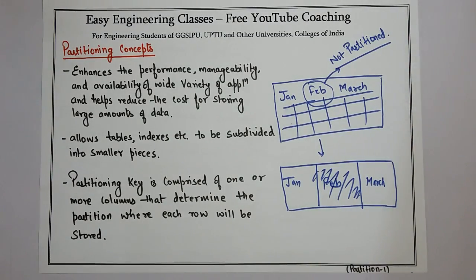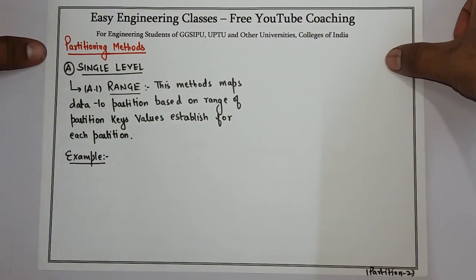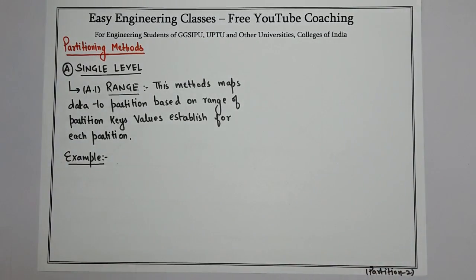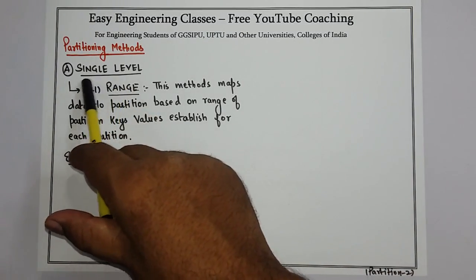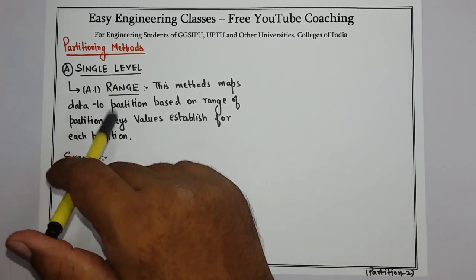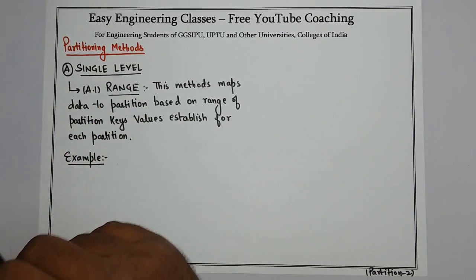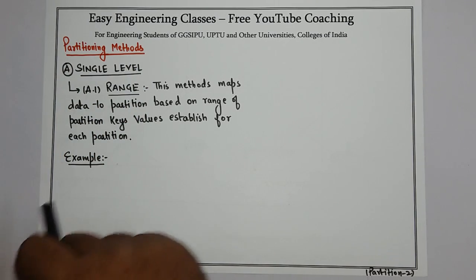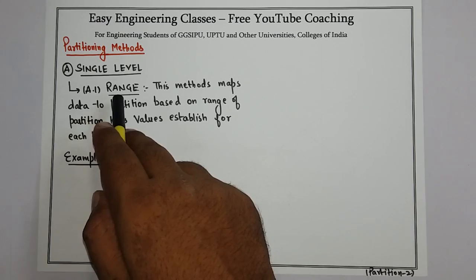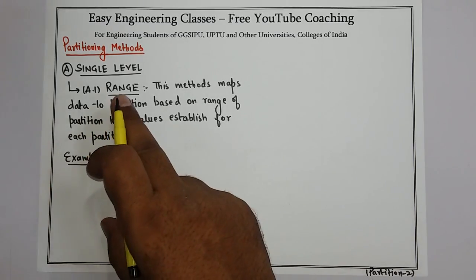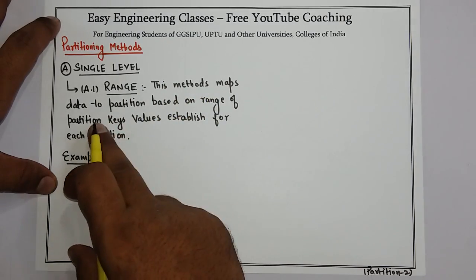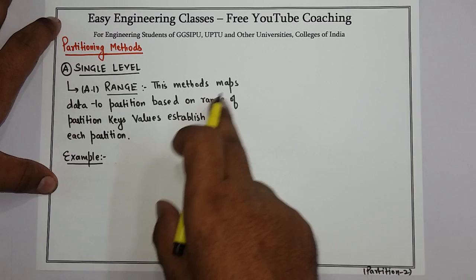Now let's see the different methods of partitioning in Oracle database. There are various methods — first, single level partitioning, which has three different methods: range, hash, and list. We will first see the range method of partitioning in single level.